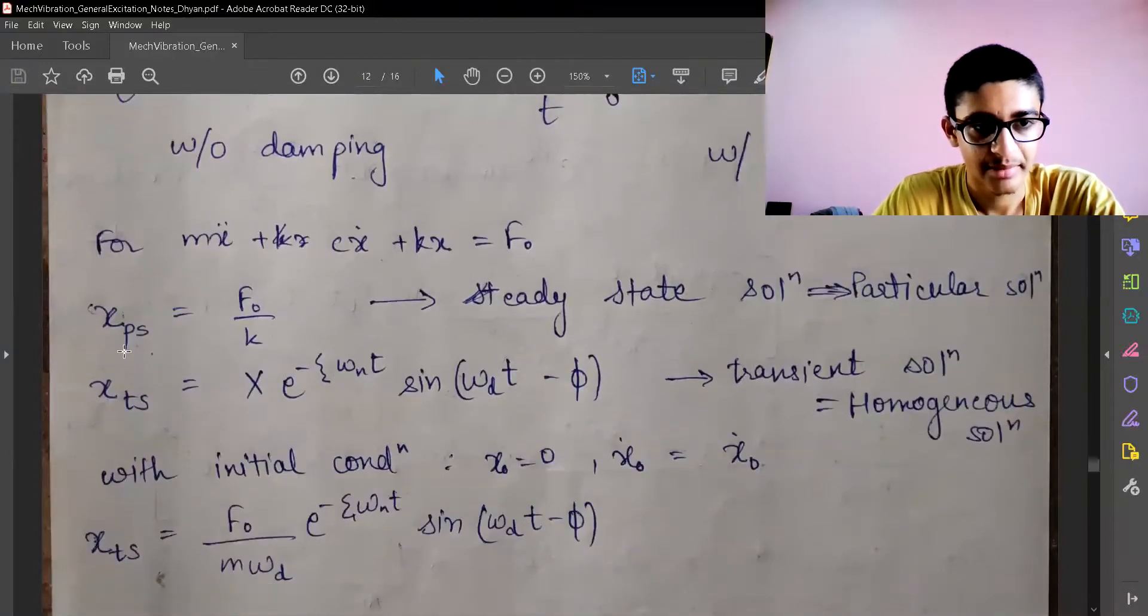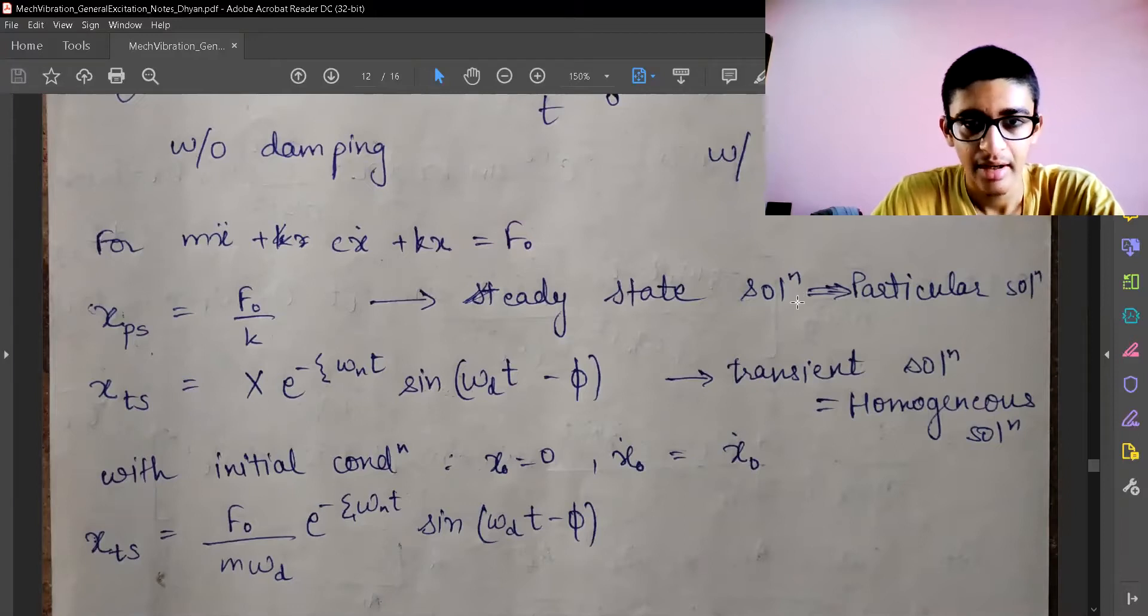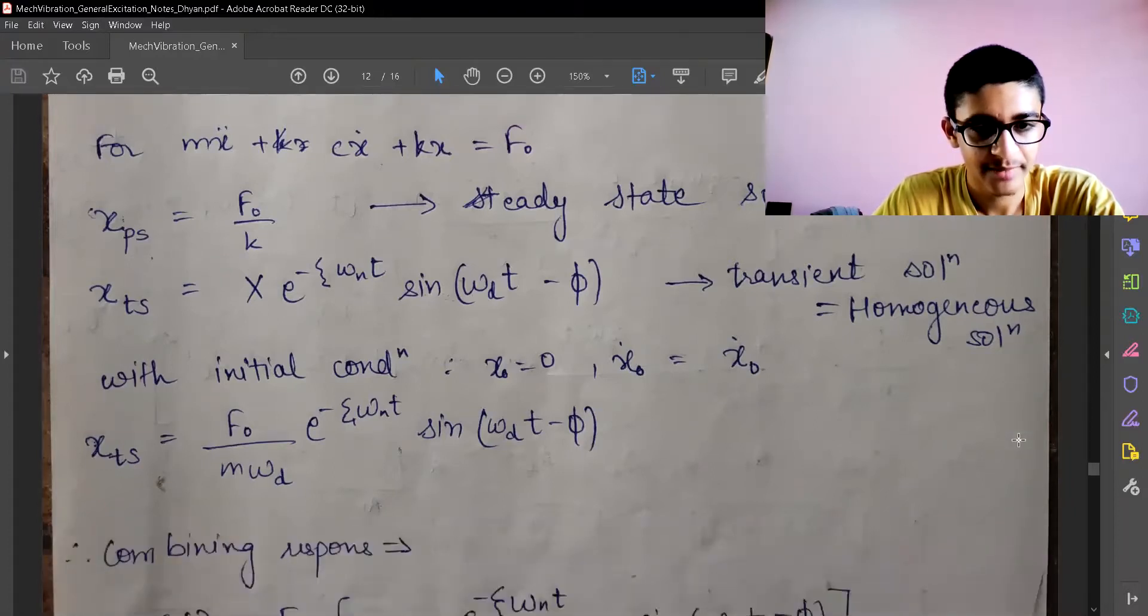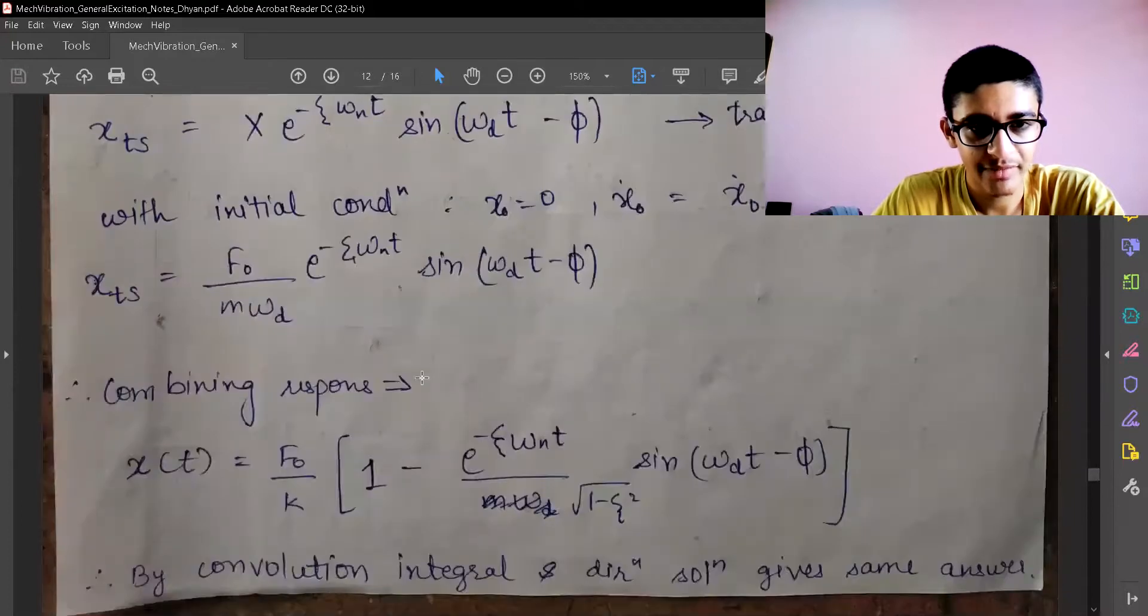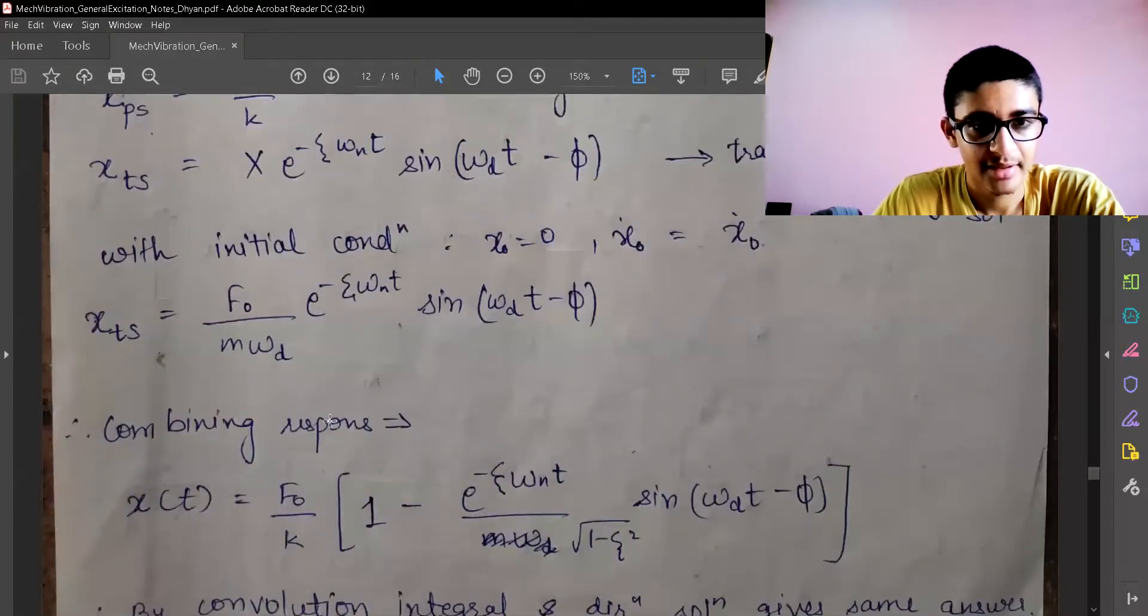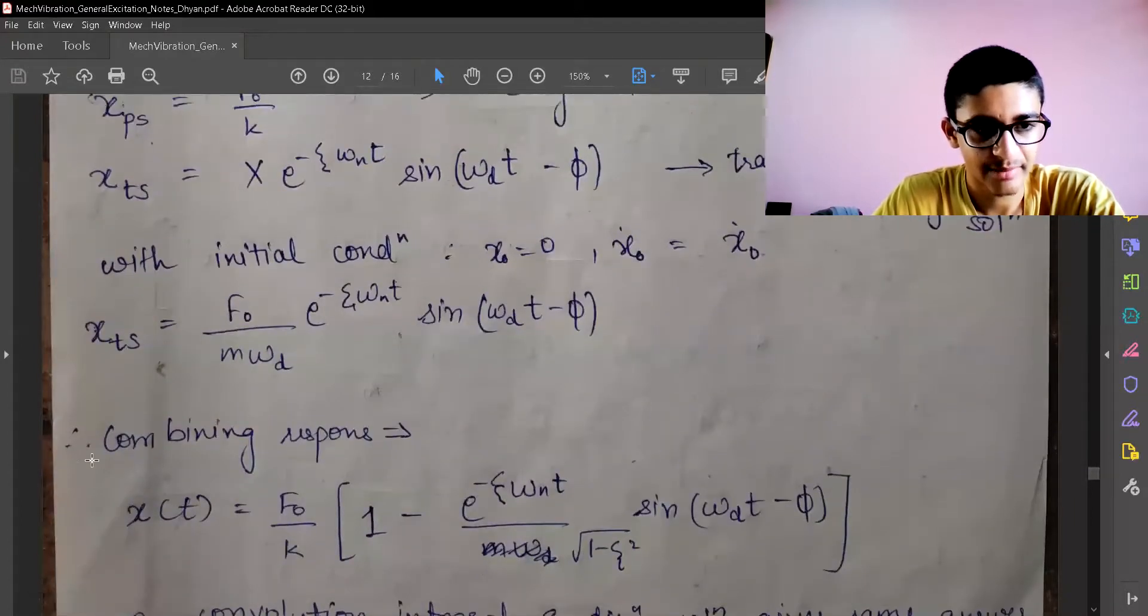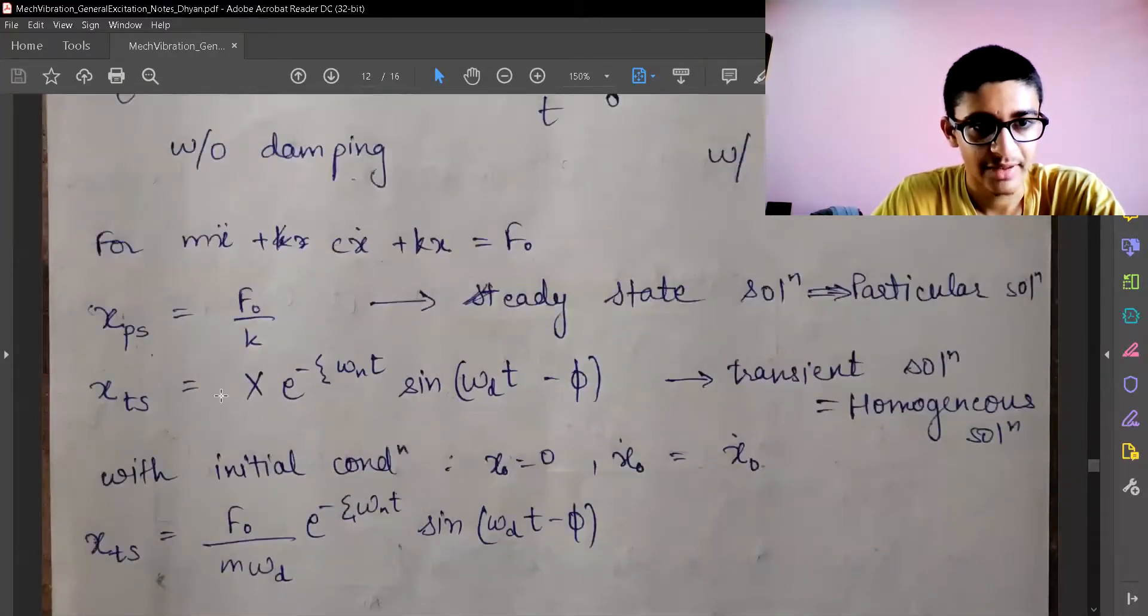We have seen this earlier also - the particular solution and transient solution. Particular solution means a steady state solution, and transient solution comes from the homogeneous part. If you want to combine them, we can combine them directly and get the combined response.